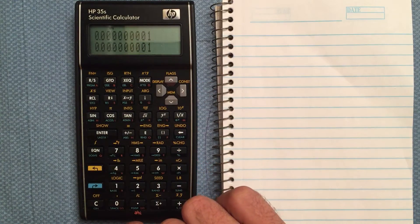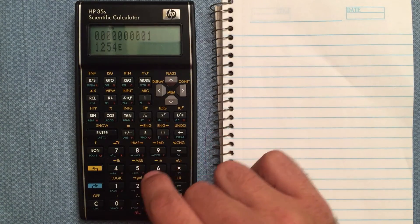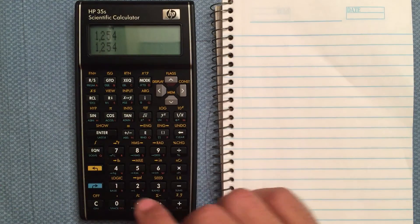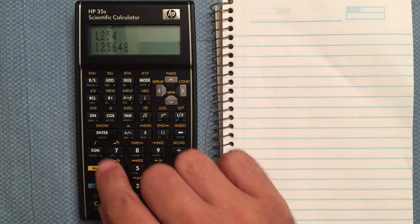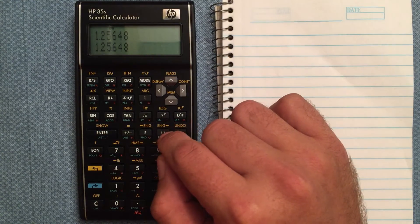4 displays all the digits. So 1.254e to the 3rd. It shows all of the digits that I'd enter, as much precision as the calculator is capable of.